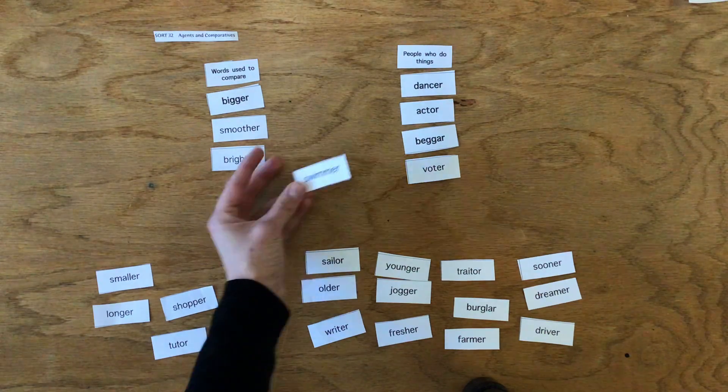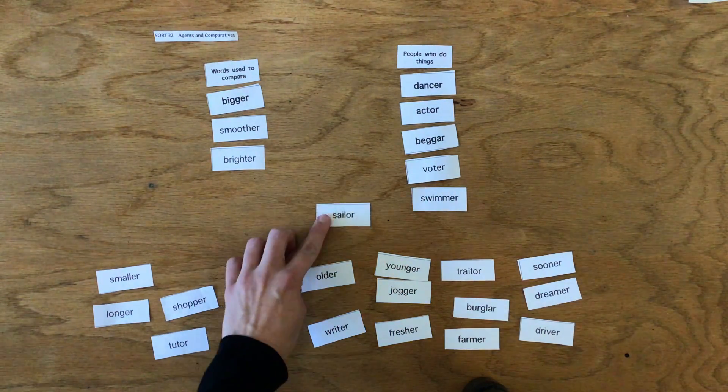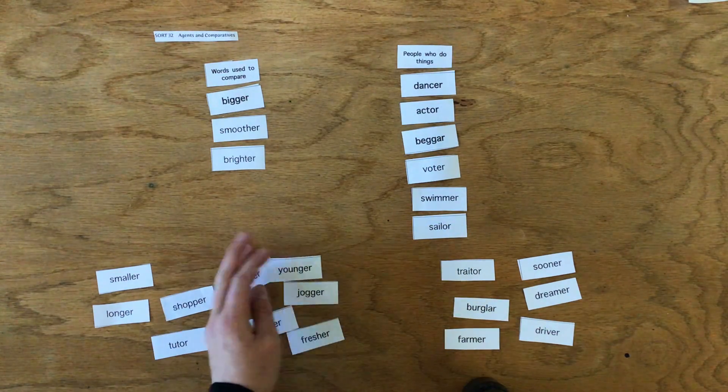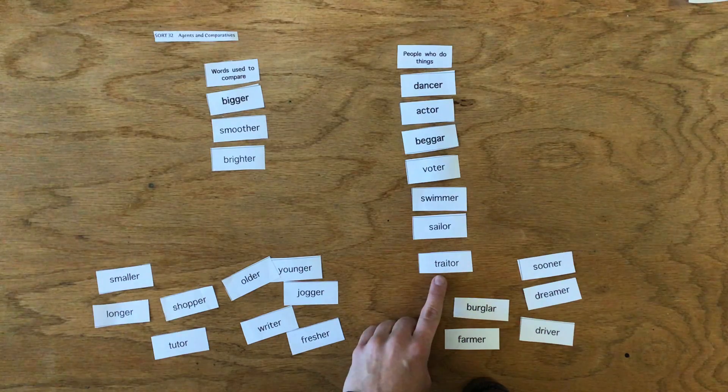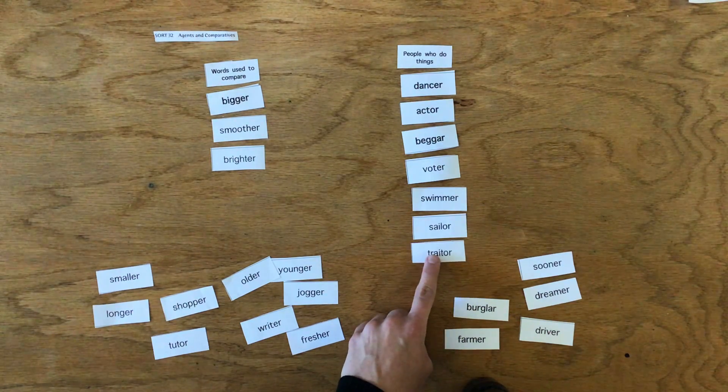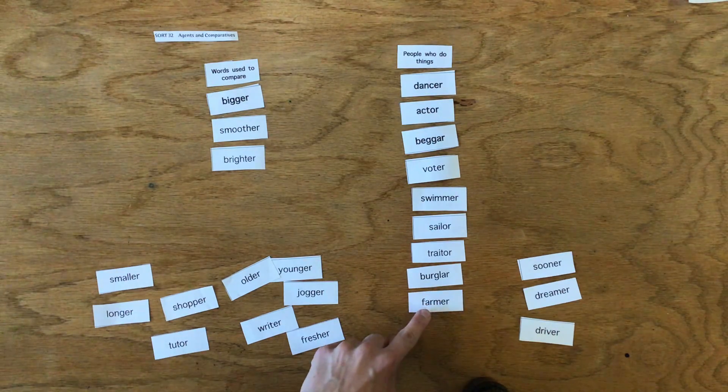Swimmer is somebody who swims. Sailor is somebody who sails. Trader is somebody who's a trader. Burglar is somebody who burgles. Farmer is somebody who farms.